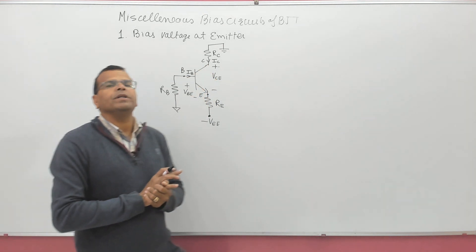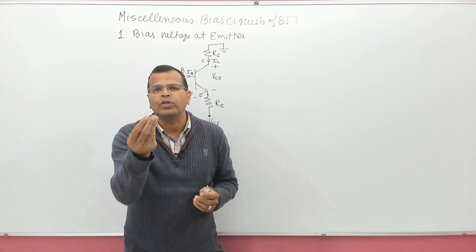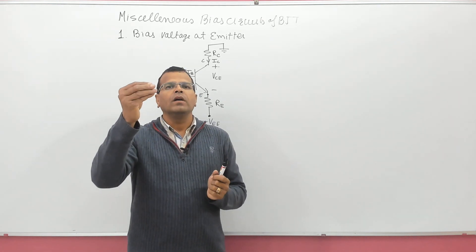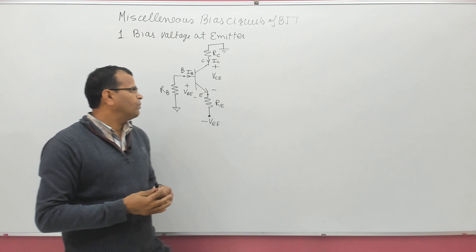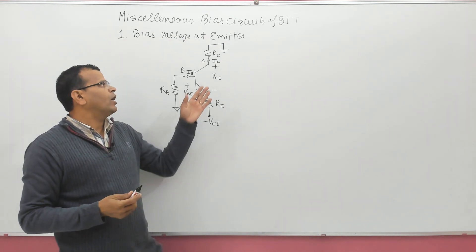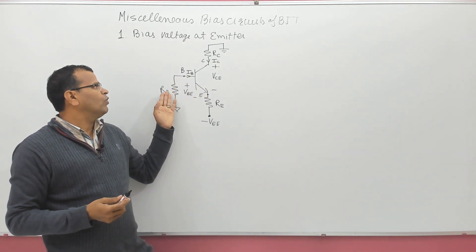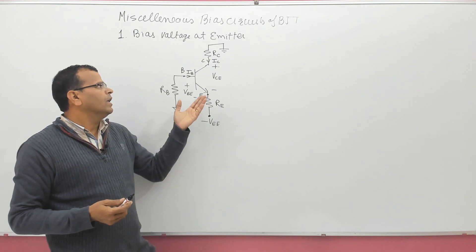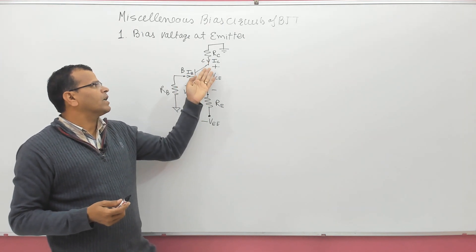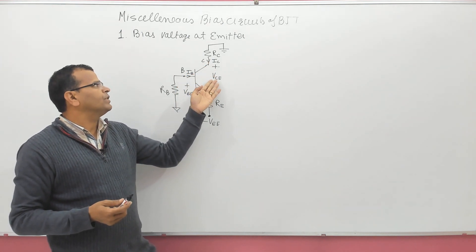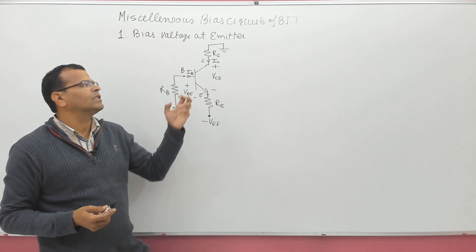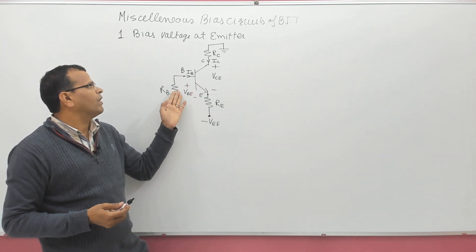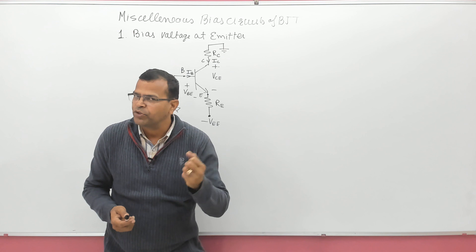Remember, in BJT circuits, there are hardly two to three types of questions. The first type could be: you may have to find the value of RB, RC, or RE, when you are given the collector current and voltage VCE or base current. So the values may be given and you may have to find the value of resistances — that is one type of question.